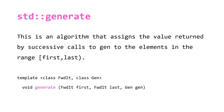For std::generate, we have an algorithm that assigns the value returned by successive calls to gen to the elements in the range first to last. Note that for the declaration of our algorithm, generate's first templated type is a forward iterator. If you're not familiar with iterators, take a look at the linked video. The parameters are two forward iterators, first and last, that point to the begin and end of our range, and then the generator.